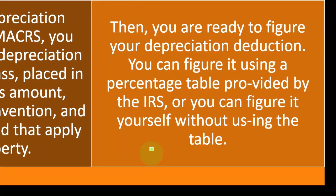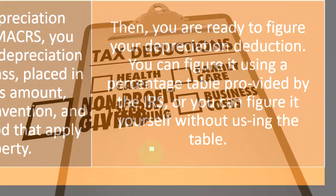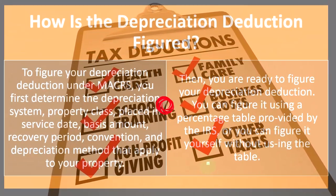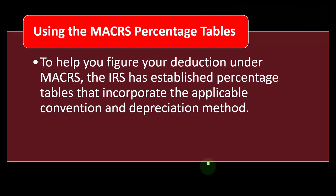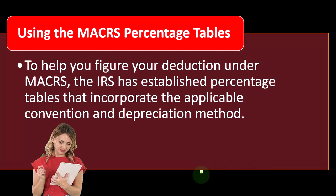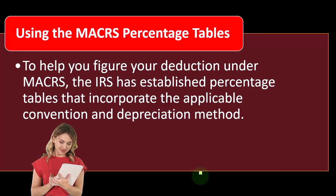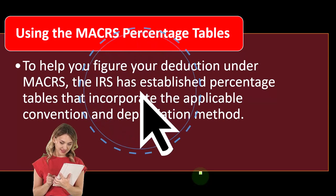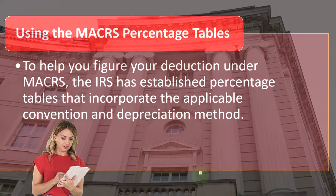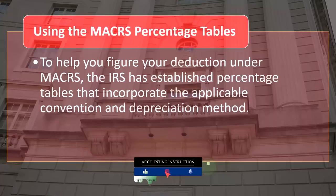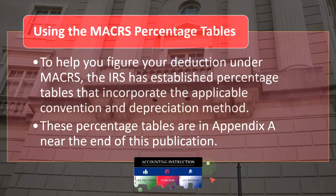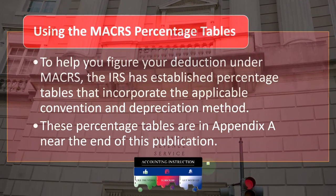Once you've determined those factors, you are ready to figure your depreciation deduction. Tax software helps with this. You can also figure it using the percentage tables provided by the IRS, or you can figure it yourself without using the tables. Software is usually necessary when you have depreciable items because it helps you track those items on a fixed assets worksheet and depreciation schedules. The IRS has established percentage tables that incorporate the applicable convention and depreciation method. These percentage tables are in Appendix A near the end of Publication 946.